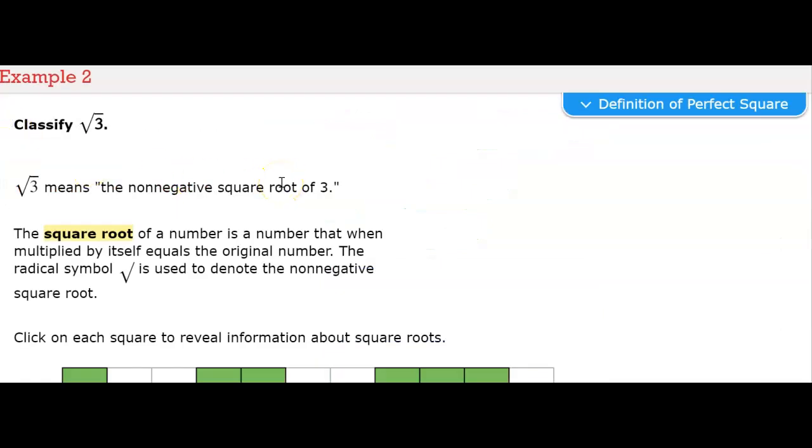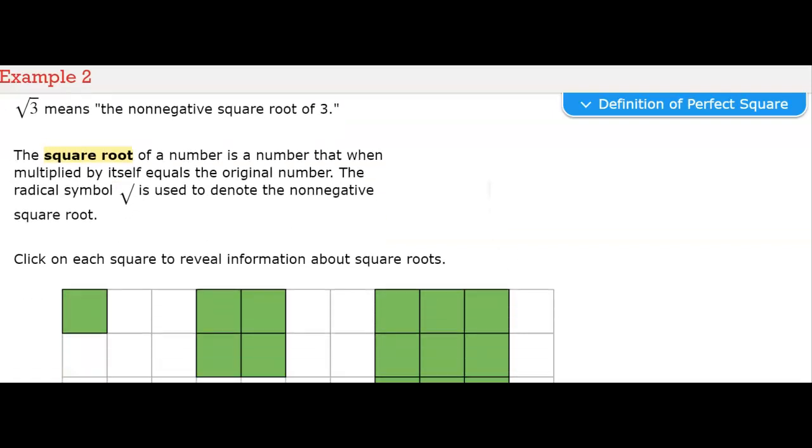Classify the square root of 3. The square root of 3 means the non-negative square root of 3. The square root of a number is a number that when multiplied by itself equals the original number. The radical symbol square root is used to denote the non-negative square root.